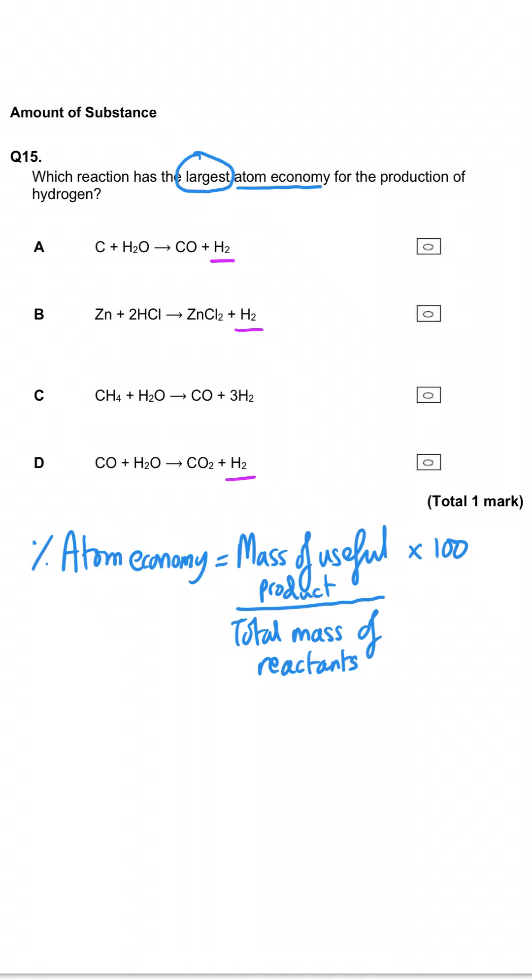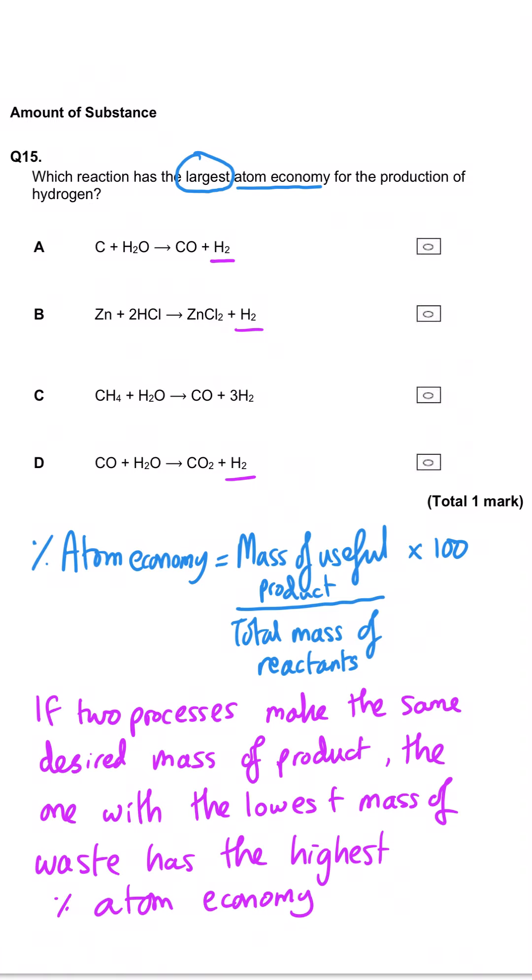I recommend looking at these equations and spotting that three of them produce the same quantity of target molecule - A, B and D all produce one molecule of hydrogen. We can cut a corner by looking at the amount of waste product produced, because if something produces a greater mass of waste product, it's got a lower percentage atom economy. In A, the waste product is carbon monoxide with an MR of 28. B produces zinc chloride with an MR of 136.4, but we can just inspect it and say it's bigger than 28, so B is definitely wrong. D produces carbon dioxide as waste with an MR of 44, which will be a bigger mass of waste than carbon monoxide. So we've ruled out B and D.